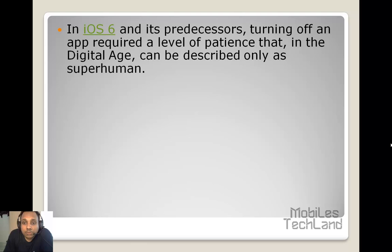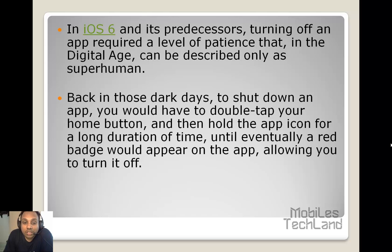In iOS 6 and its predecessors, turning off an app required a level of patience that in the digital age can be described only as superhuman. Back in those dark days, to shut down an app you would have to double tap your home button and then hold the app icon for a long duration of time until eventually a red badge would appear on the app, allowing you to turn it off.